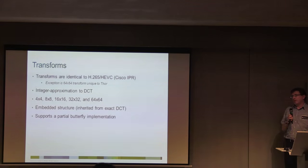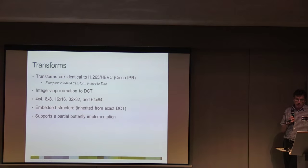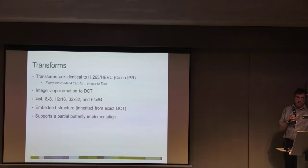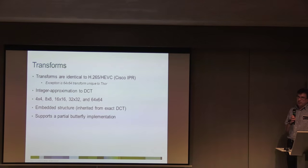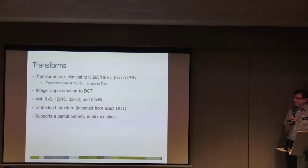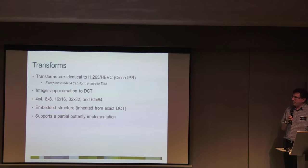The transforms were something we could take from H.265 because we put them in there. We've added a 64x64 transform in the same style. The idea is an integer approximation to the DCT which maintains some of the symmetries of the mathematical DCT, and you can have a partial butterfly implementation that reduces implementation complexity. There was a huge battle in H.265 about lifting implementations versus partial butterfly — lifting is a nightmare, so we went with partial butterfly.